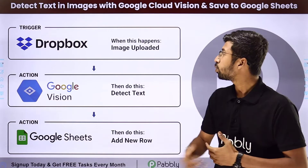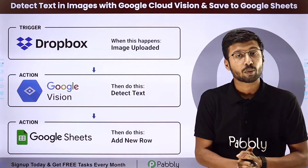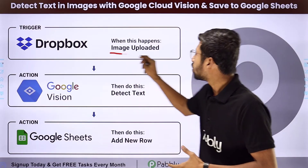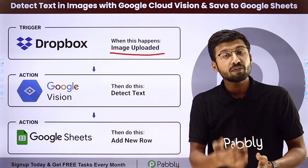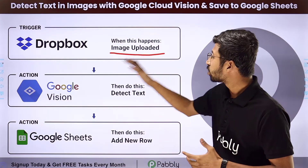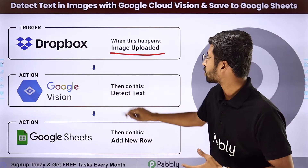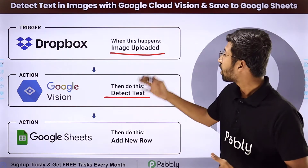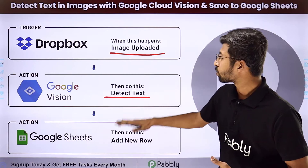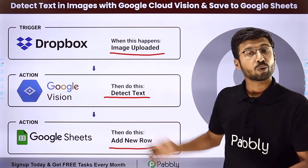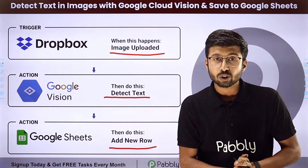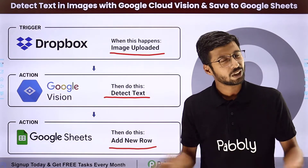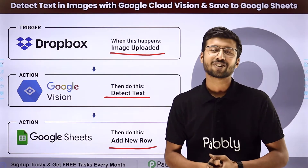In this automation, suppose you are uploading those images into Dropbox. The trigger of this automation will be uploading a new image on Dropbox, and then automatically using Google Cloud Vision we are going to detect the text in that image, and then automatically add all of those details into Google Sheet as a new row. To know how to set up this automation, come with me to my screen.